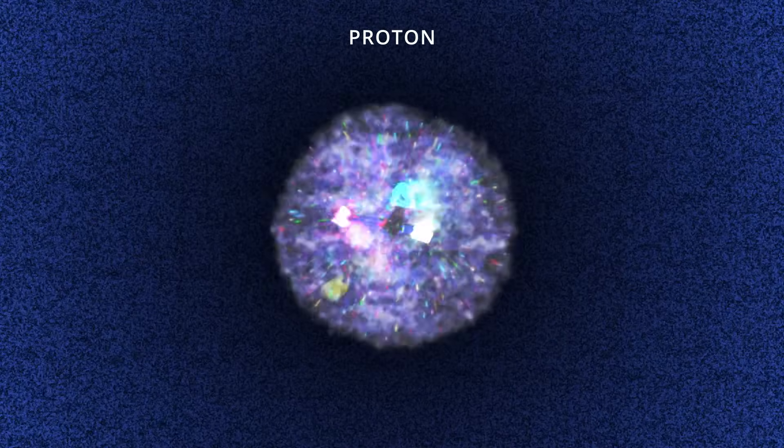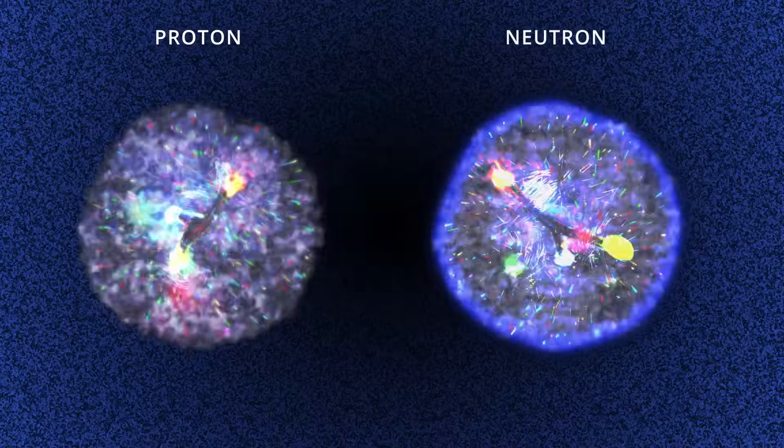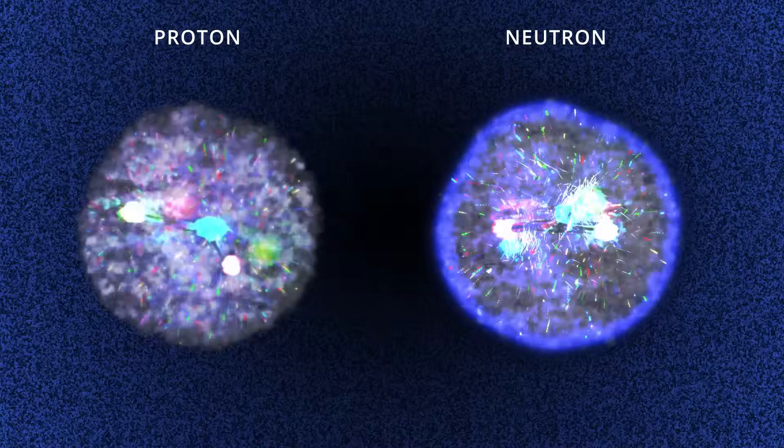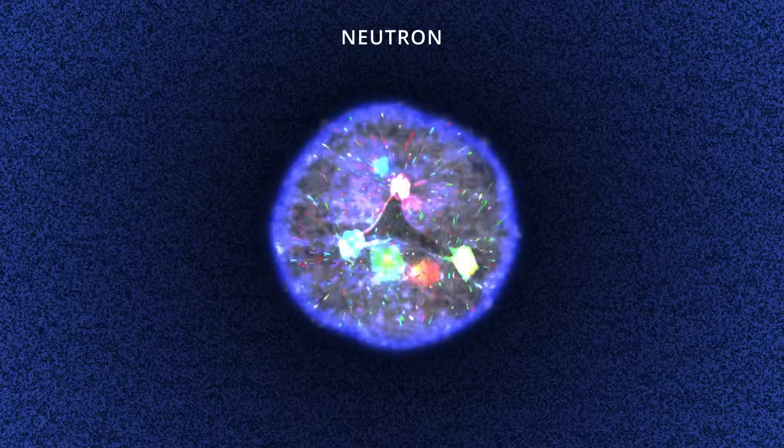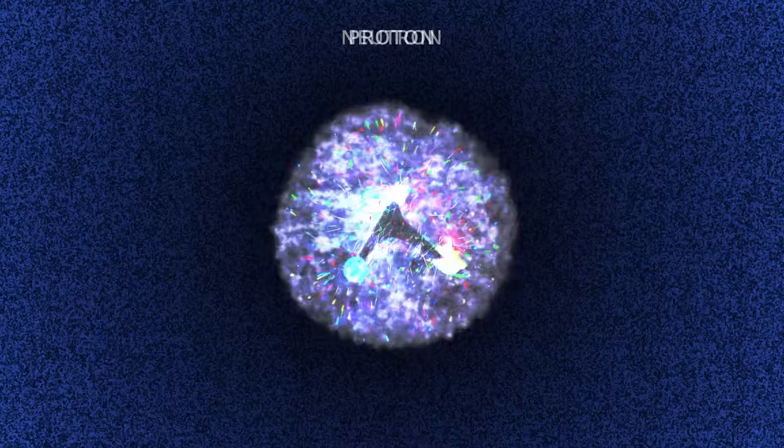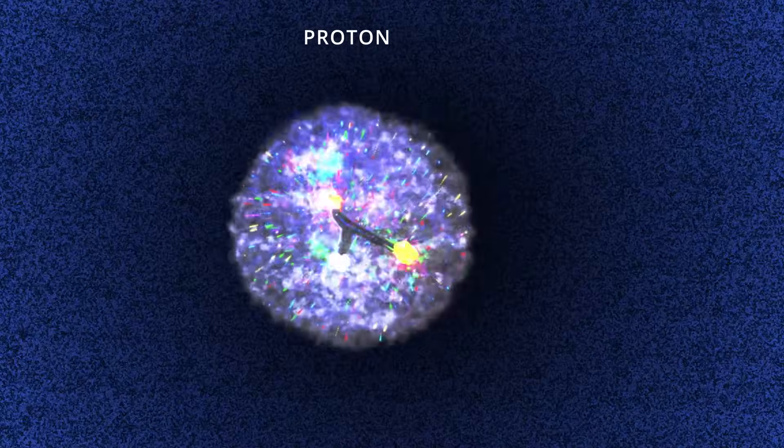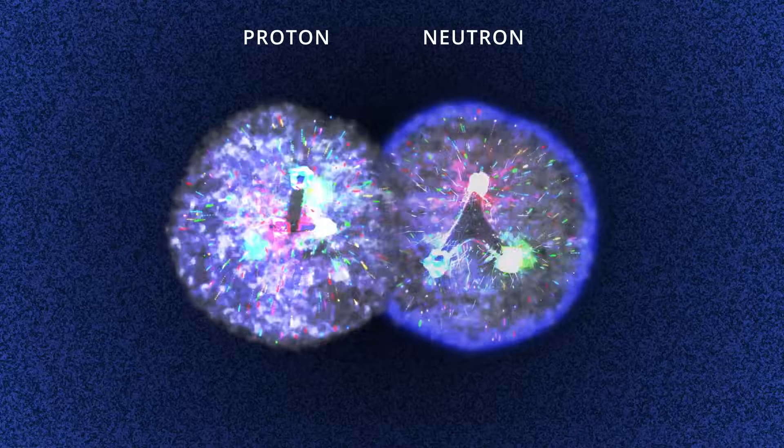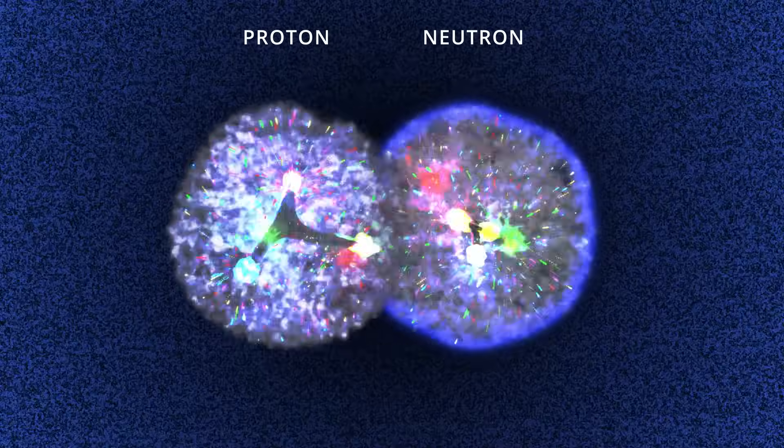More complex nuclei contain not only positively charged protons, but neutrally charged neutrons. While the proton can exist by itself in a stable form, neutrons on their own are unstable and will quickly decay into a proton, electron, and antineutrino. But neutrons remain stable when bound to a proton by the strong force in nuclei.